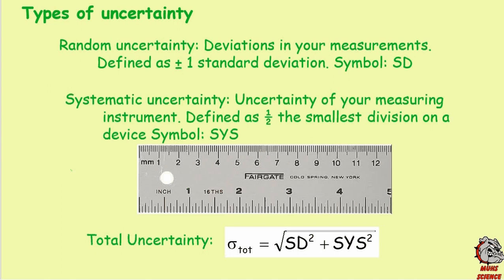The other type of uncertainty is called systematic uncertainty — that's the uncertainty in your measuring device. Measuring devices can only measure down so far, so there's systematic uncertainty in them. If you look at this ruler, we're measuring in centimeters and I can measure down to the millimeter and estimate between each individual millimeter. The systematic uncertainty is defined as one-half the smallest measurable amount, so half a millimeter is 0.05 centimeters in this case.